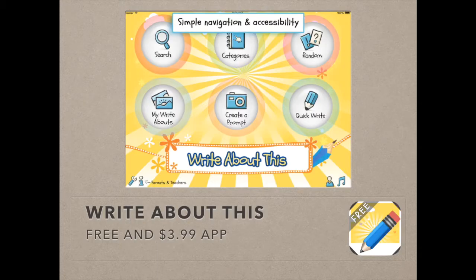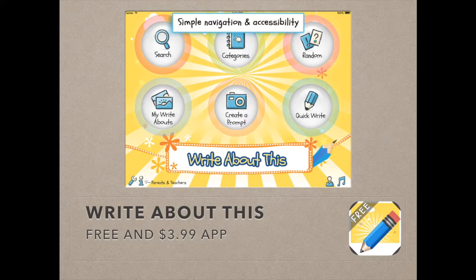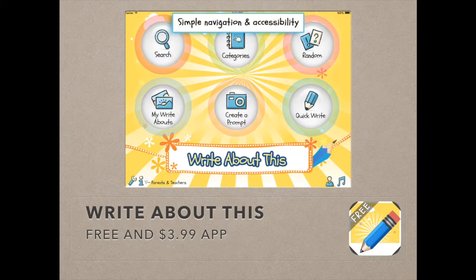I'm going to show you a few iOS apps to get started. The first one is called Write About This. It's free — it has a free version but also a paid version that unlocks even more features. You can see from the home screen that it has a primary look and feel to it. You can look for prompts in certain categories, randomly generate writing ideas, save pieces of writing within the app, and do quick writes. You can also create a prompt using the iPad camera to snap an image and then put a prompt with it.